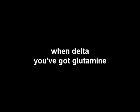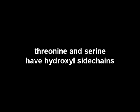Asparagine contains a gamma amine. When delta, you've got glutamine. Threonine and serine have hydroxyl side chains, uncharged and polar as can be.